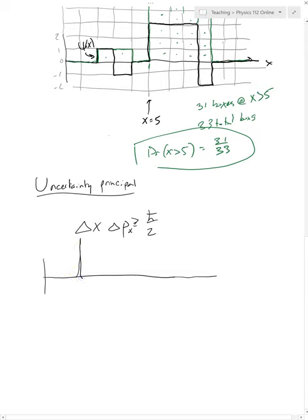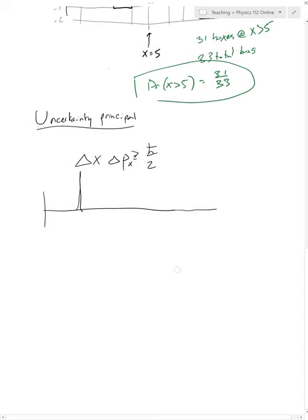Now if you try to find the wavelength of that thing, it's a very undefined wavelength. Now why does wavelength matter? Well if you remember, the momentum of something is equal to h over the wavelength. So if the wavelength is really poorly defined, it means that the momentum is really poorly defined as well.